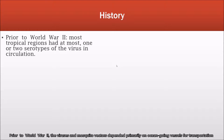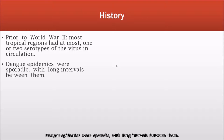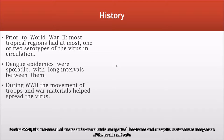Prior to World War II, the viruses and mosquito vectors depended primarily on ocean-going vessels for transportation. As a result, most tropical regions had at most one or two serotypes of the virus in circulation, and dengue epidemics were sporadic with long intervals between them. During World War II, the movement of troops and war materials transported the viruses and the mosquito vector across many areas of the Pacific and Asia.